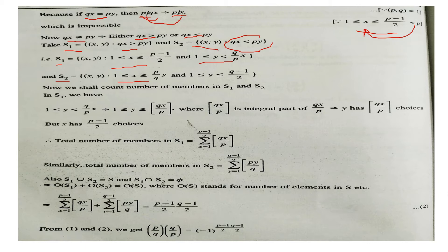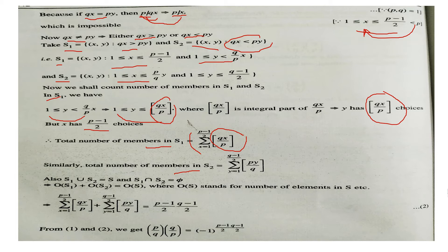In set S1, y lies between 1 and qx/p, so the number of choices for y is given by the floor function ⌊qx/p⌋. Summing over x from 1 to (p−1)/2 gives the total number of members in S1. Similarly, the total number of members in S2 is the sum of ⌊tq/p⌋ over t from 1 to (p−1)/2... wait, ⌊py/q⌋ summed over y. Since S1 and S2 are disjoint and their union is S, we have |S1| + |S2| = |S| = (p−1)/2 · (q−1)/2, which proves the required identity.